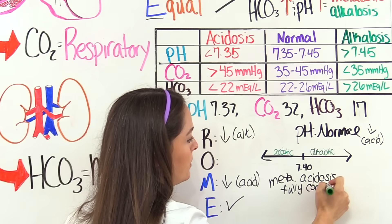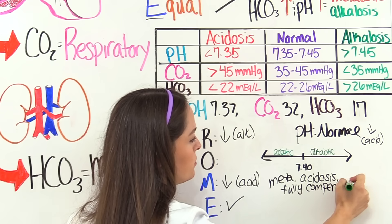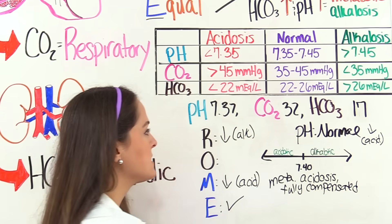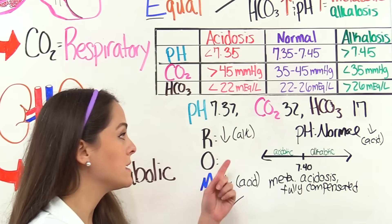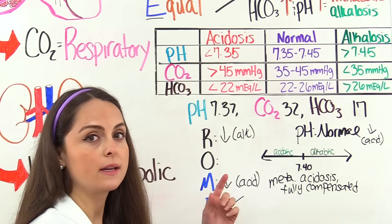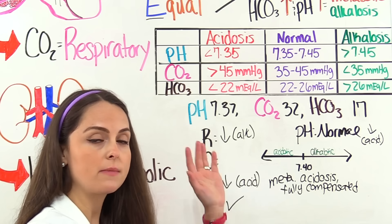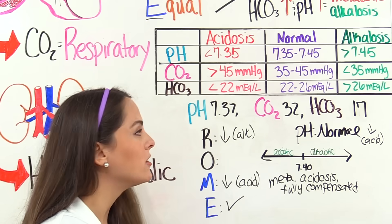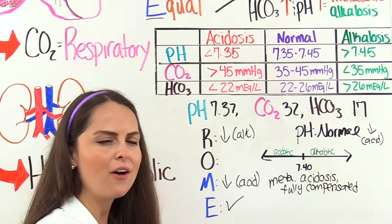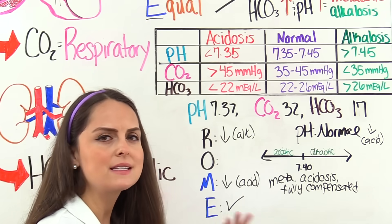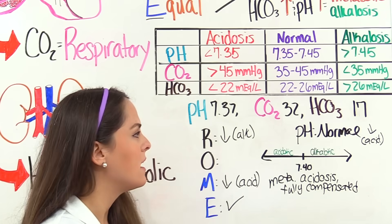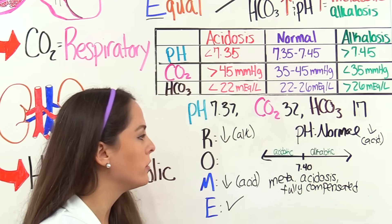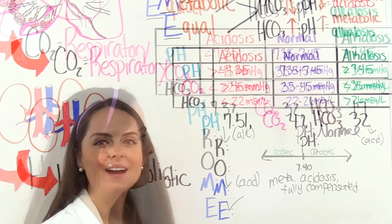Our blood pH is back to normal, and our respiratory system — because these two systems balance each other out — also went abnormal on the alkalotic side to help balance the acidotic conditions we were having. So we are now fully compensated.